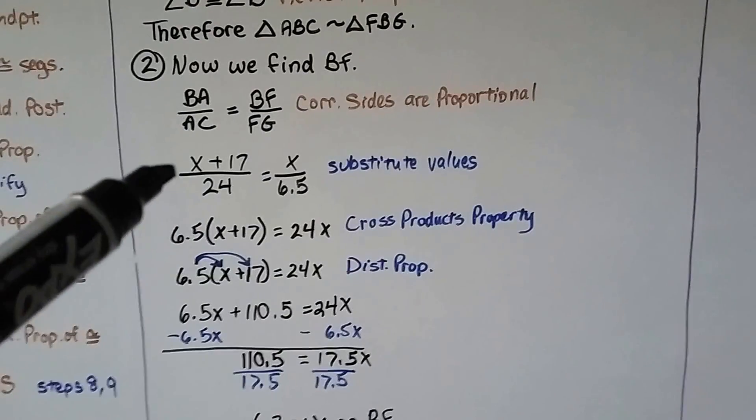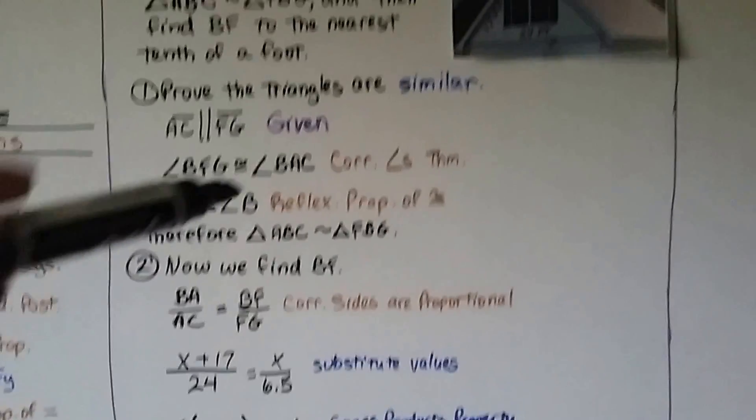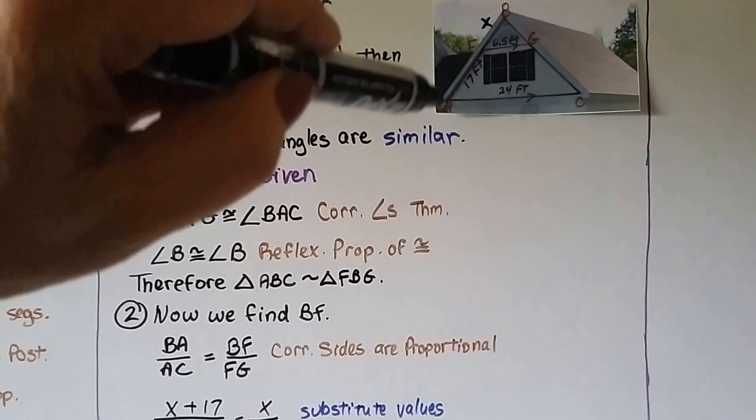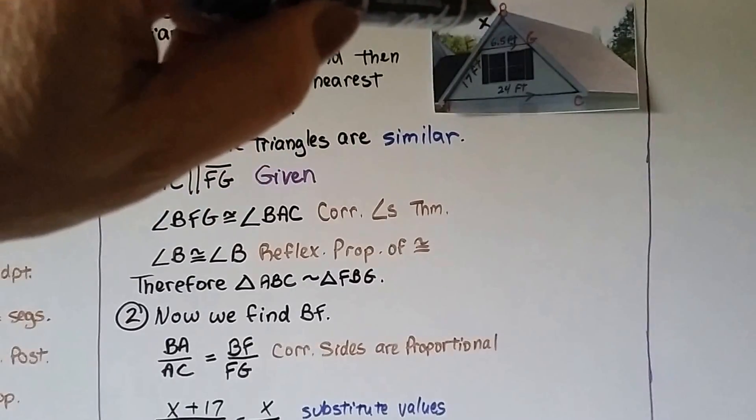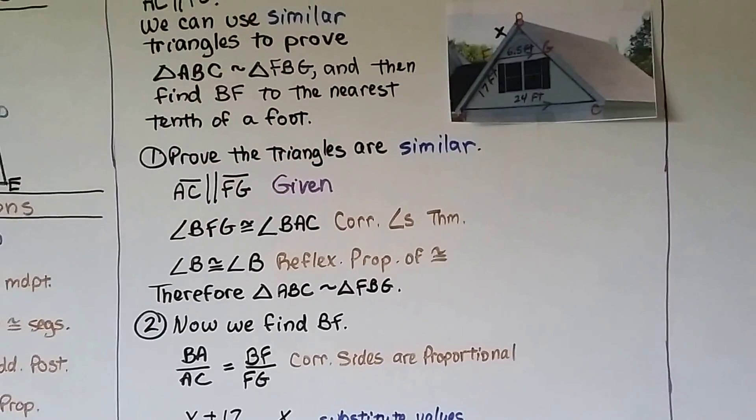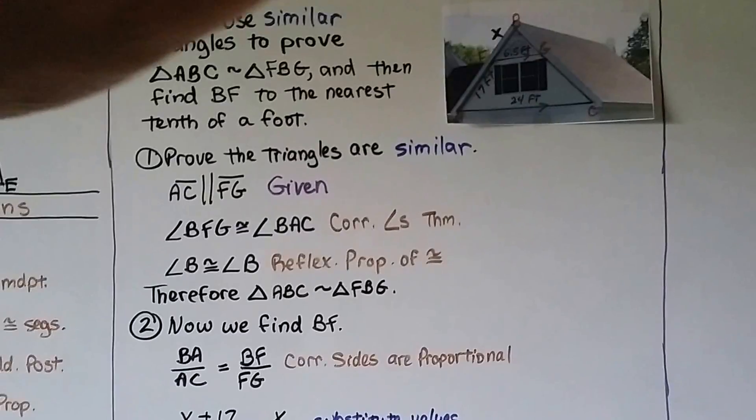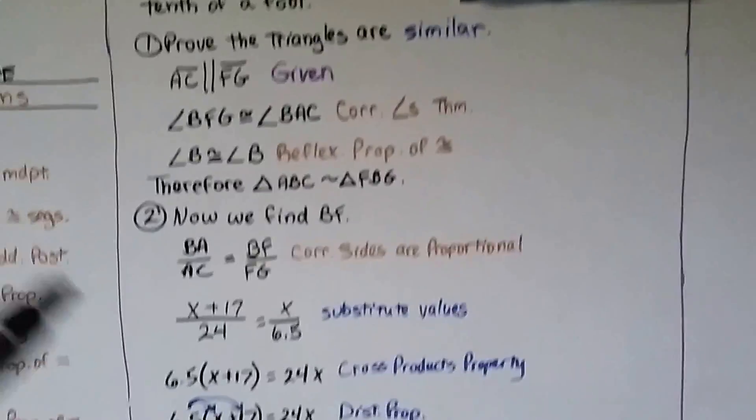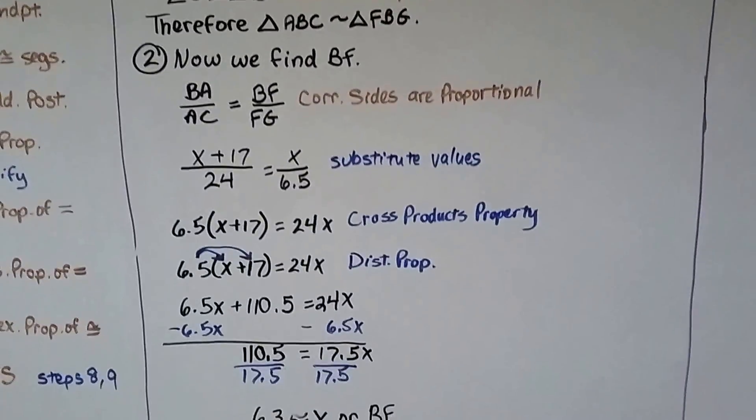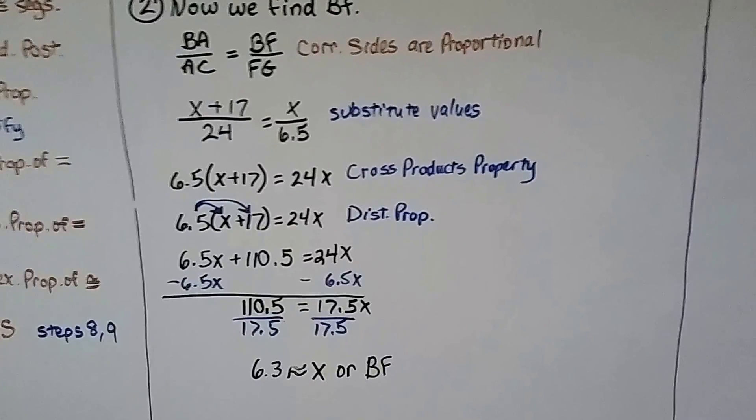And the BA we can put as X plus 17, because we know from F to A is 17. So we can add this, so it's X plus 17 over the 24. Then we can put the X over the 6.5. Substituting in the values.